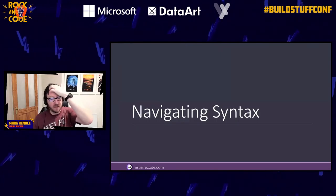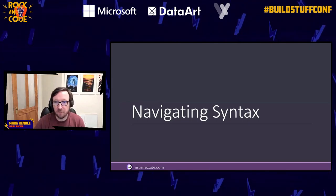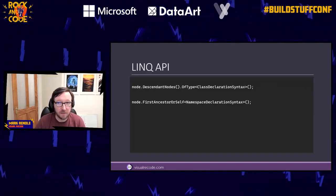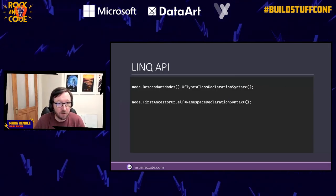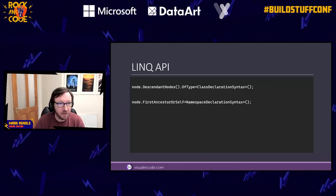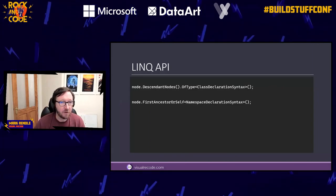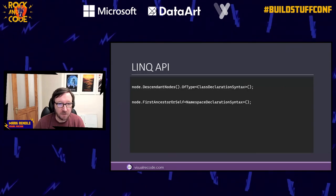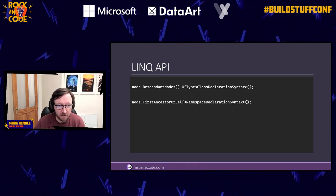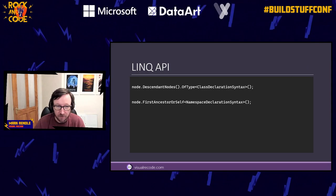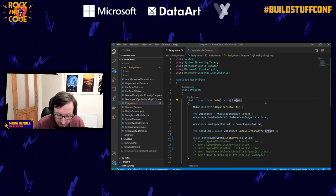There are multiple ways of navigating around syntax once it's loaded into memory. The simplest one you'll probably start with is the LINQ API. This looks a lot like working with an XML document using LINQ to XML, or working with HTML using something like AngleSharp. We've got things like DescendantNodes, and then we can use OfType to filter down to specifically class declarations. We have FirstAncestorOrSelf to look back up the tree to find the NamespaceDeclarationSyntax.